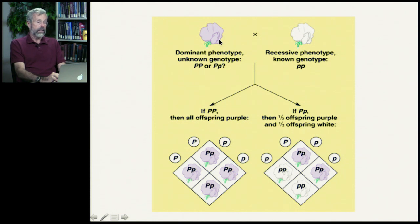On the other hand, if this is a heterozygote, then half of its gametes are going to be capital P and the other half are going to be little p. So, if we cross that with a white one, we'd have an equal ratio of heterozygotes, which would be purple, and white. So, if you have half white and half purple, this must have been heterozygote.